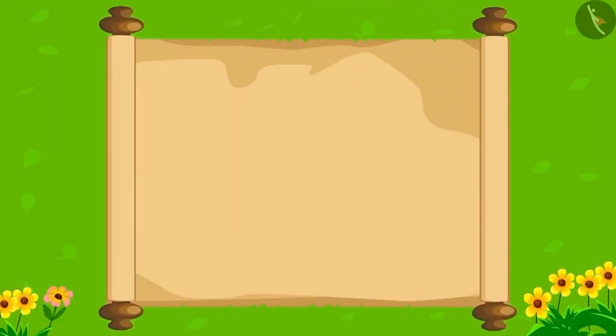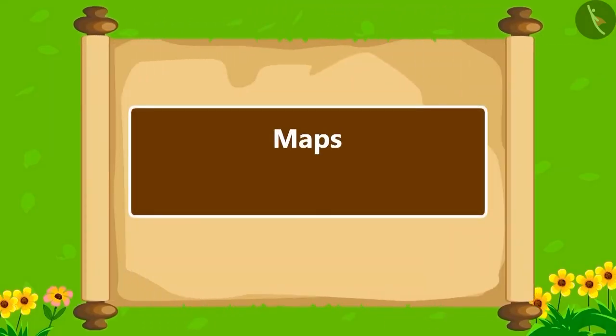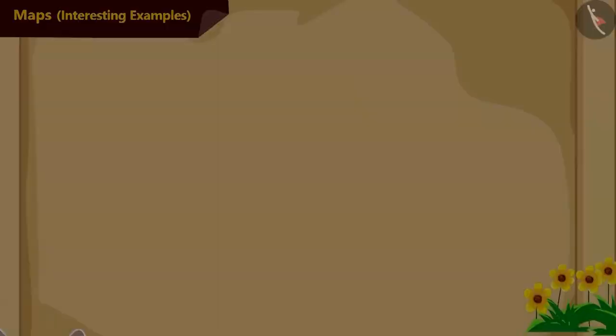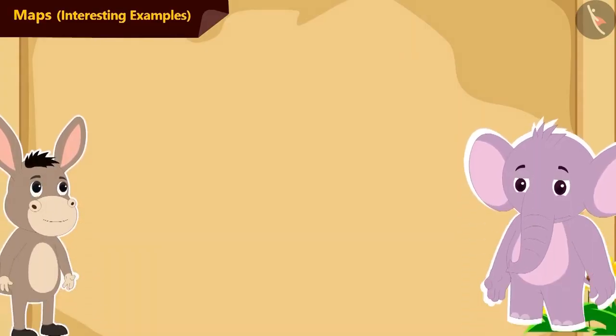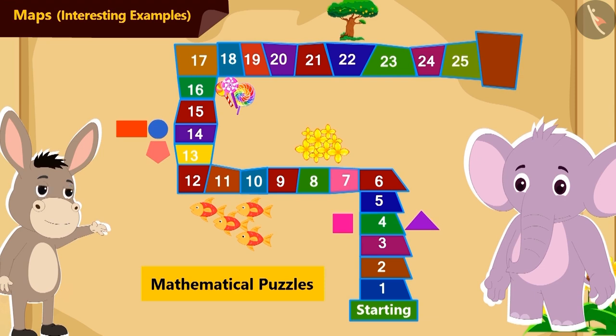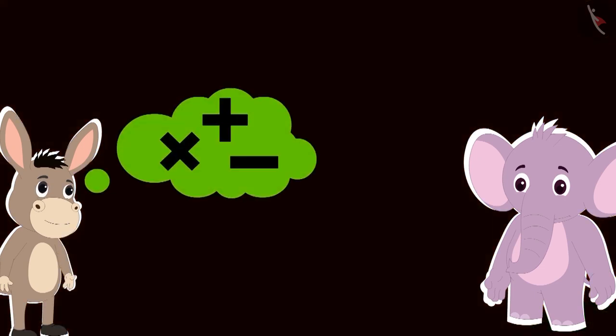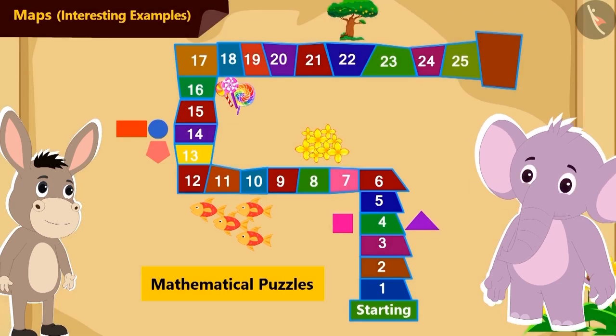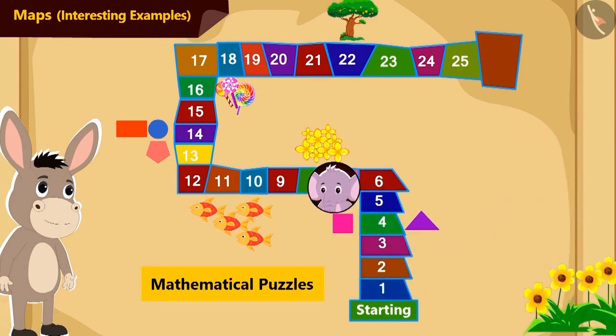Hello children! We are looking at some interesting examples related to maps. Bholla and Appu are playing a game. Bholla has made a map like this for Appu on the floor. He will ask Appu some mathematical puzzles. Appu has to find solutions to those puzzles, then walk over the map and reach the tile containing the number found in the solution.